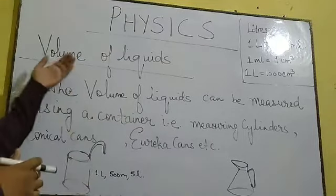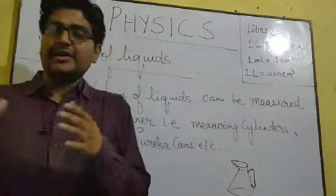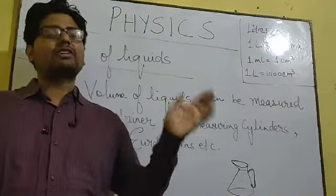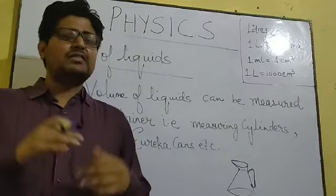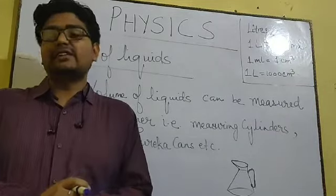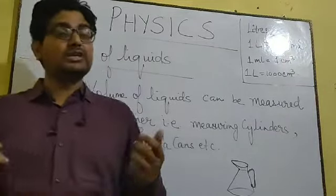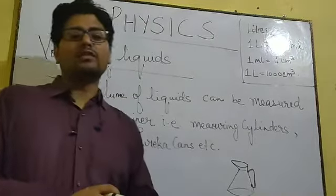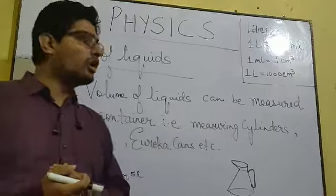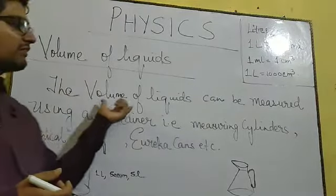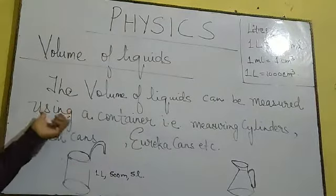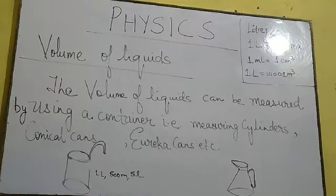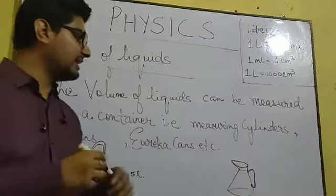Now let us talk about how to measure the volume of liquids. In the case of liquid, liquid generally does not have a fixed shape. So since liquid does not have a fixed shape, it is very difficult to measure the volume using any formula. We can measure the volume of liquids by using a container — measuring cylinders.